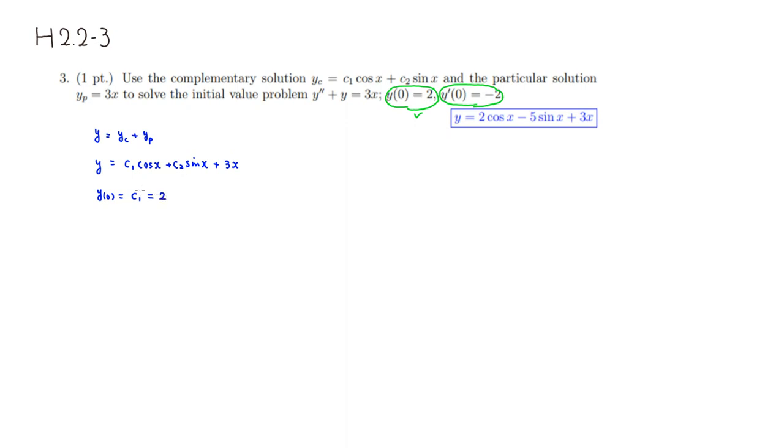Then we take the derivative of y. Then we get the derivative of cosine is negative sine, so it's negative c1 sine of x, and plus c2, derivative of sine is cosine of x, then derivative of 3x is 3. Then we use the second initial value condition.